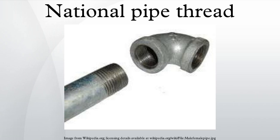The taper on NPT threads allows them to form a seal when torqued, as the flanks of the threads compress against each other — as opposed to parallel straight thread fittings or compression fittings, in which the threads merely hold the pieces together and do not provide the seal. As the thread body is tapered, a larger diameter keeps compressing into a smaller diameter and finally forms a seal. This means that NPT fittings should be coated and lubricated using a lubricating material like lubricating paste or tape. The use of tape also helps to limit corrosion on the threads, which otherwise can make future disassembly nearly impossible.